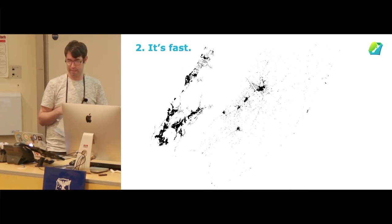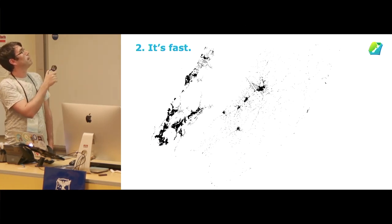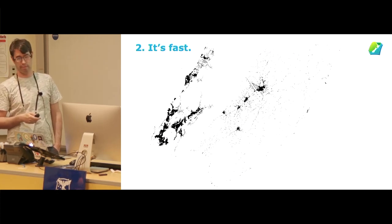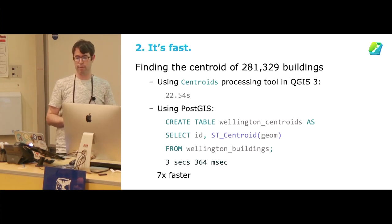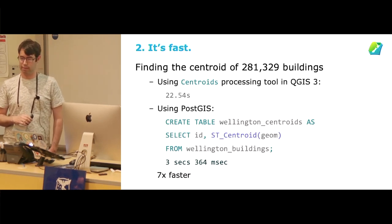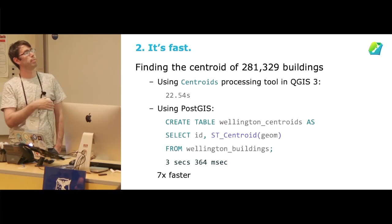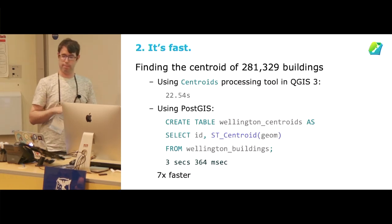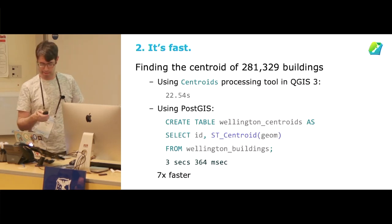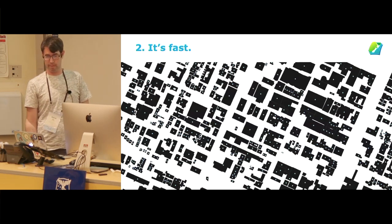The next thing I've learned is that it's fast, and it's mostly because of the previous point. This is 300,000 building outlines that cover the Wellington region. If we do something like find the centroid of those building outlines in QGIS 3, it takes about 23 seconds, and if we do it in PostGIS, it takes about 3 seconds. However, now that I've put this slide together, Niall will probably rewrite the centroid implementation in QGIS, and make it 10 times faster than what it is at the moment. But, that's competition that I'm quite happy to see continue.